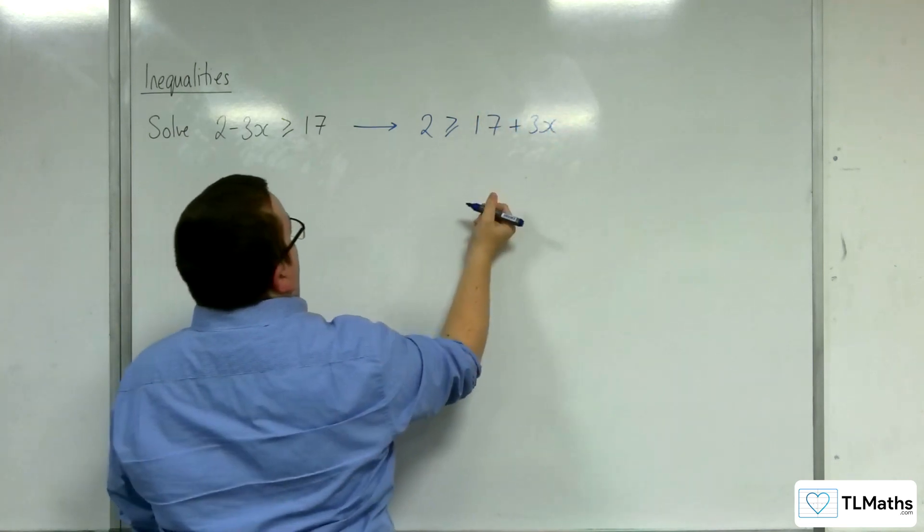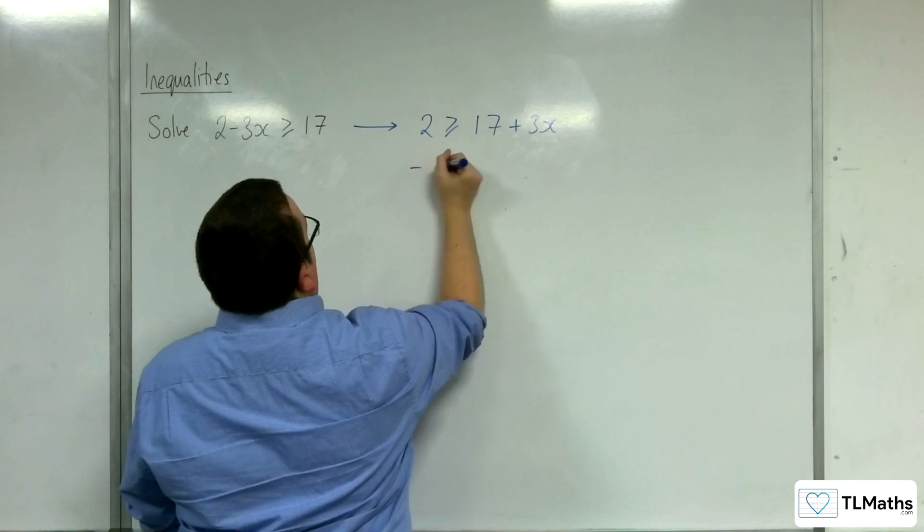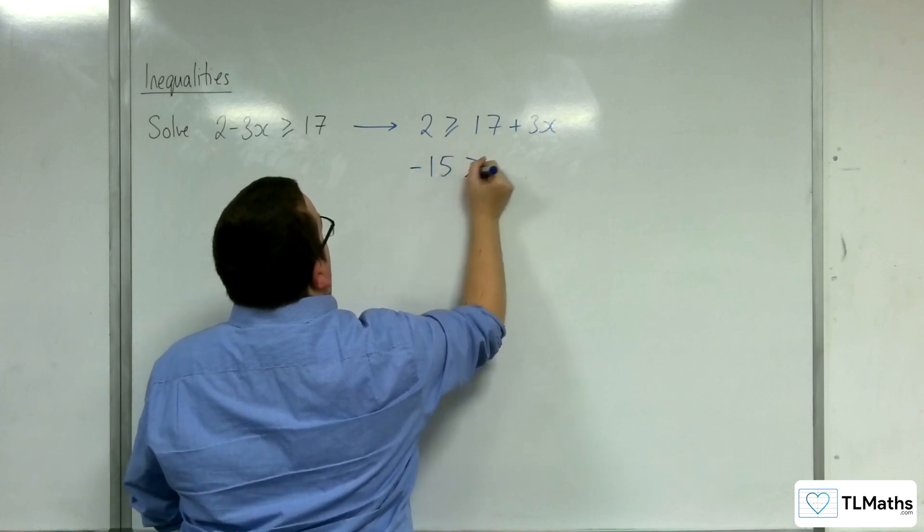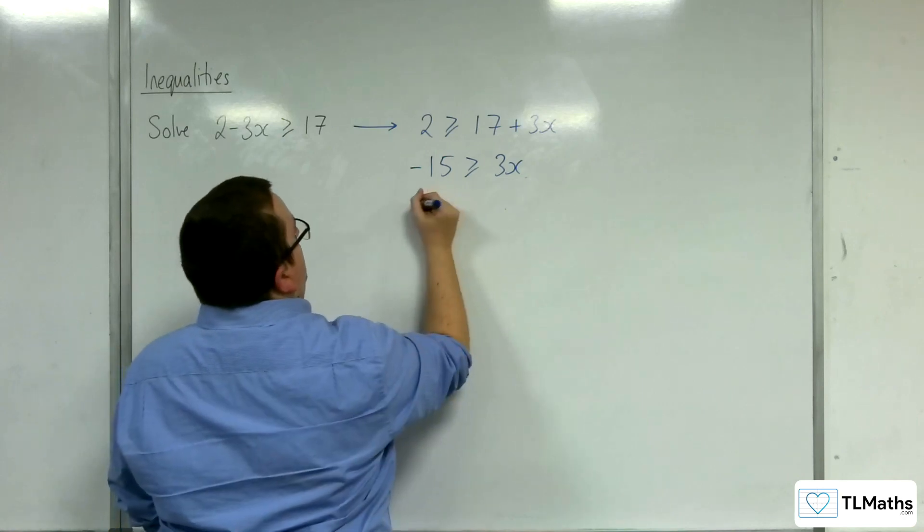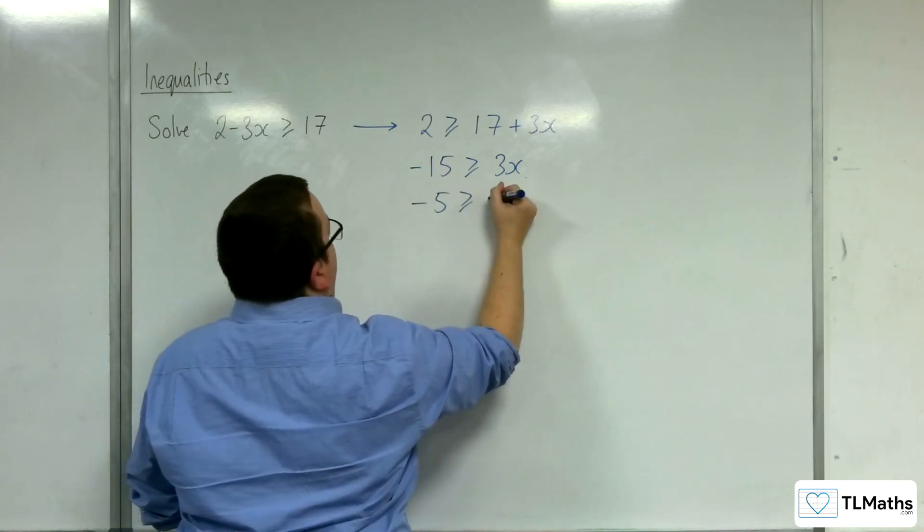Then, subtract the 17 from both sides, which is minus 15 is greater than or equal to 3x. And then, divide by the 3, and so you get minus 5 is greater than or equal to x.